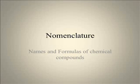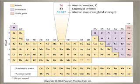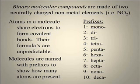Nomenclature: names and formulas of chemical compounds. The first thing you need to do to master nomenclature is to learn the difference between the metals and the non-metals when you look at a periodic table.